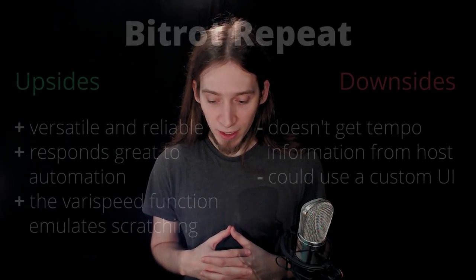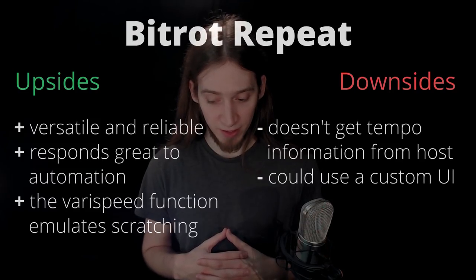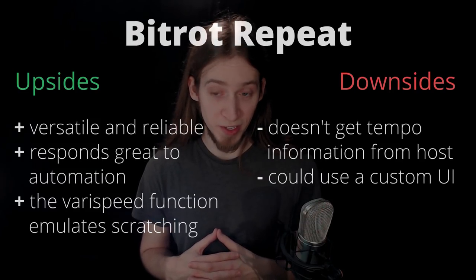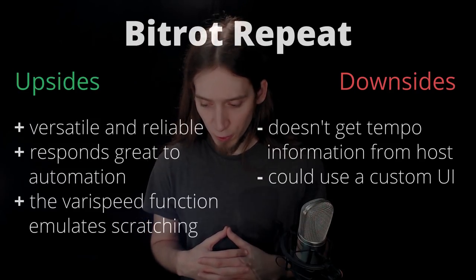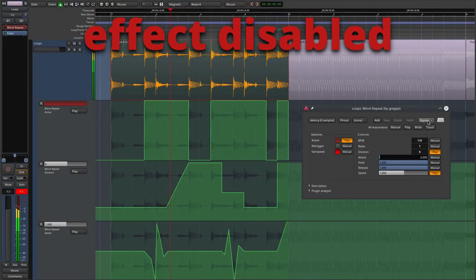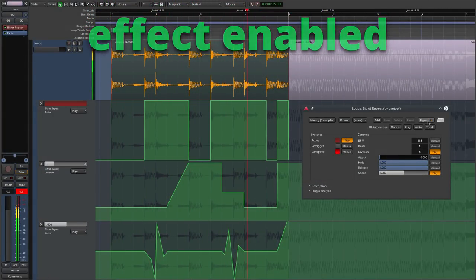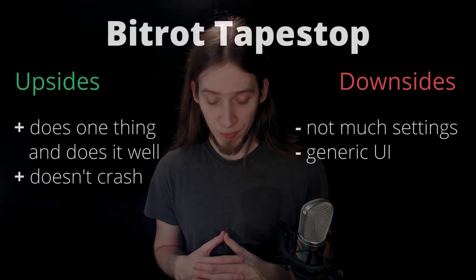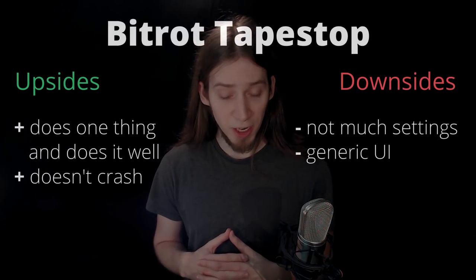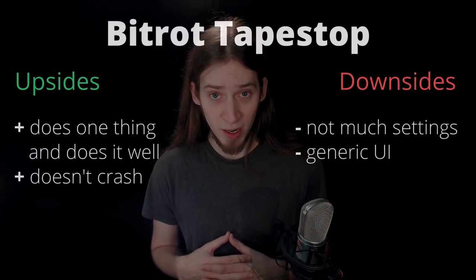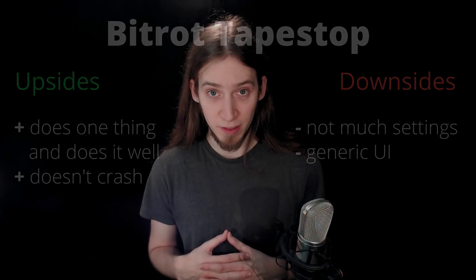Bitrot Repeat is great for glitchy repeating effects — very versatile. Don't be scared off by the lack of a custom graphical user interface. Bitrot Tape Stop is likewise very useful for that one iconic tape-stop effect.